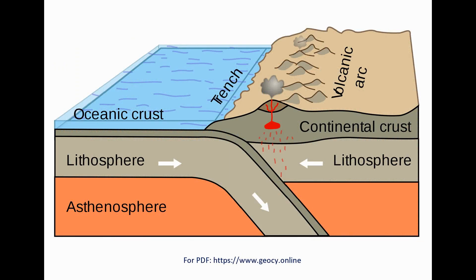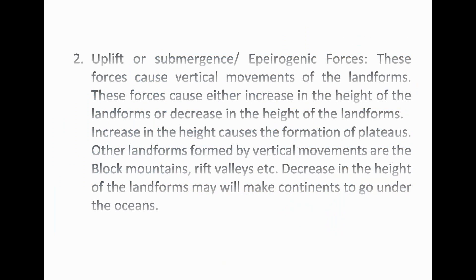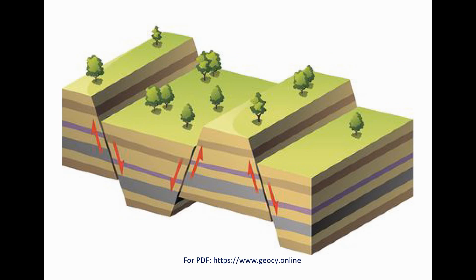These structures or folds are called fold mountains. The second one is epeirogenic forces. These forces cause vertical movements of the landforms, either increasing or decreasing their height. Increase in height causes the formation of plateaus. Other landforms formed by vertical movements are block mountains and rift valleys. Decrease in height may cause continents to go under the oceans.